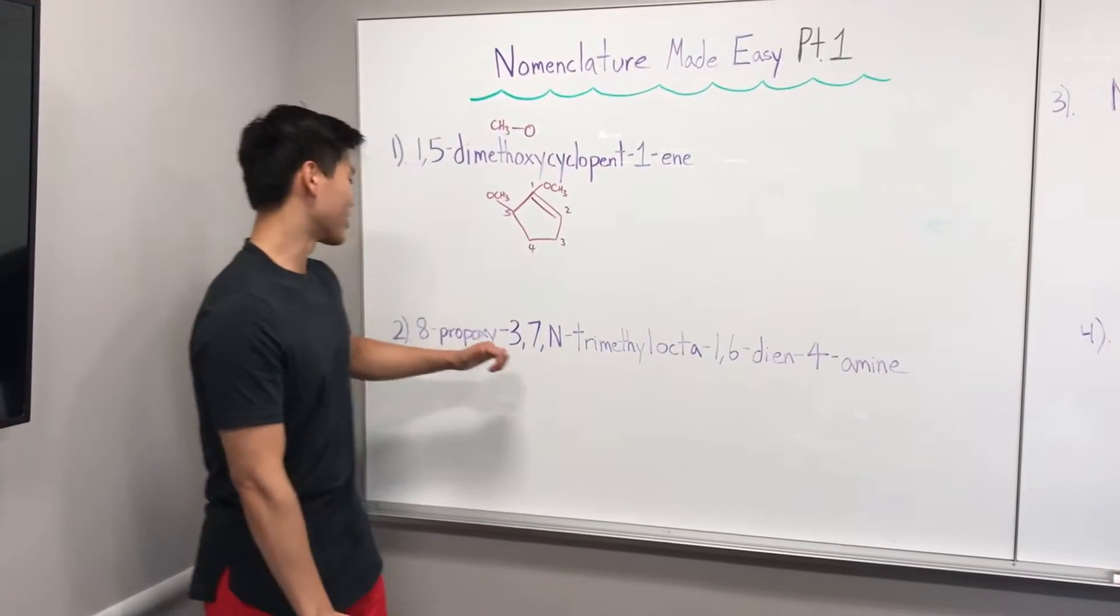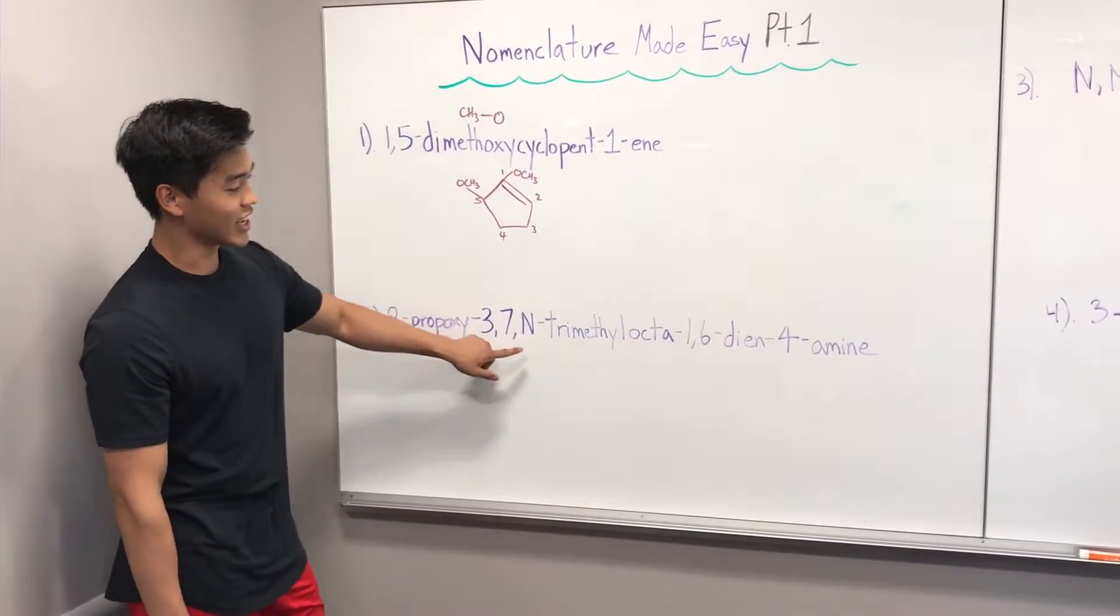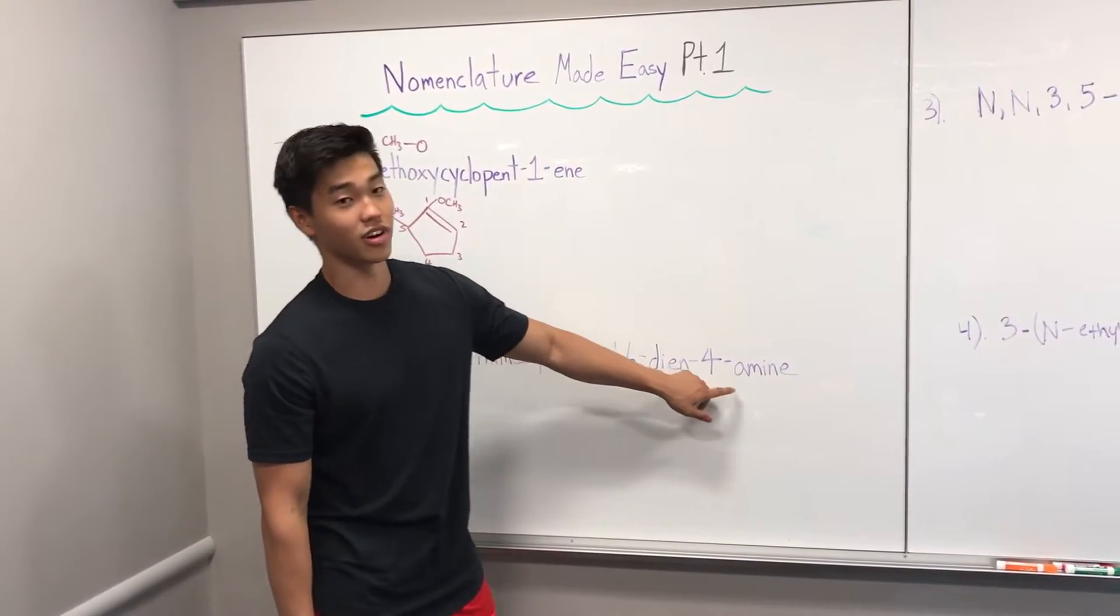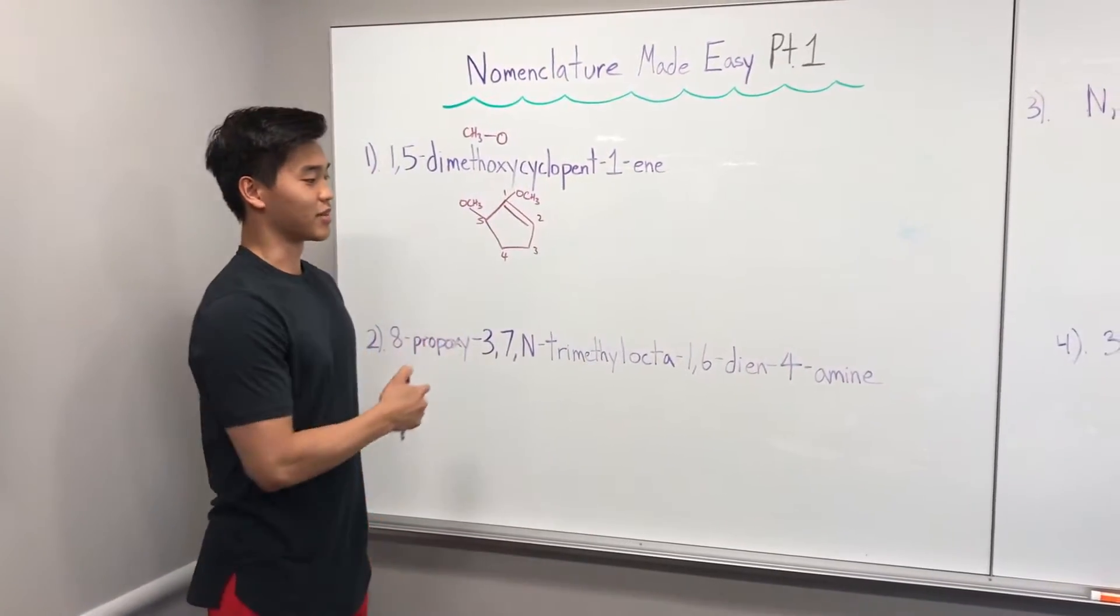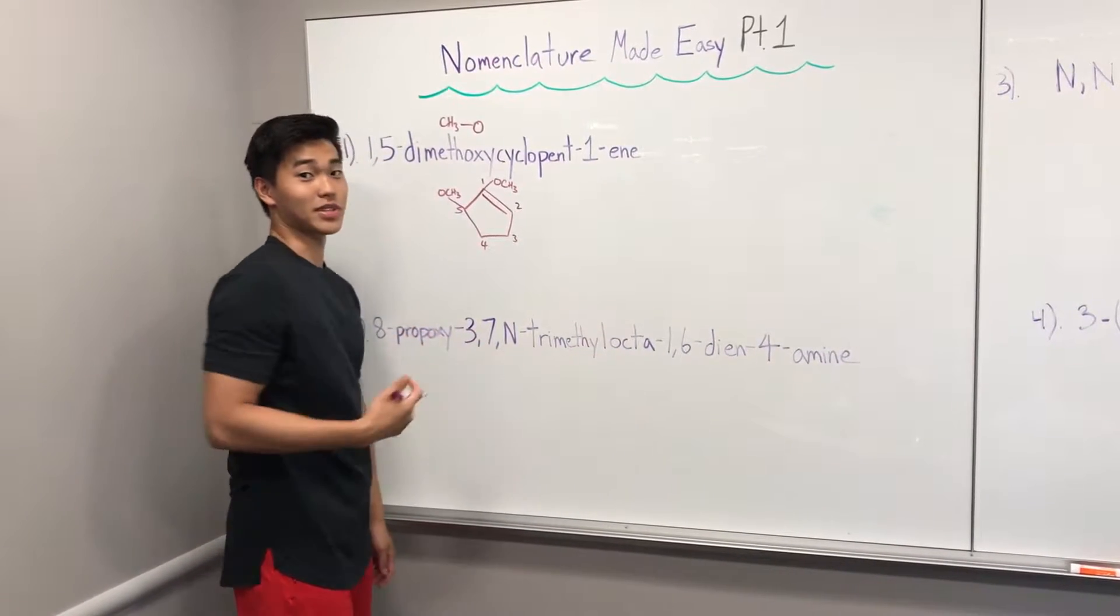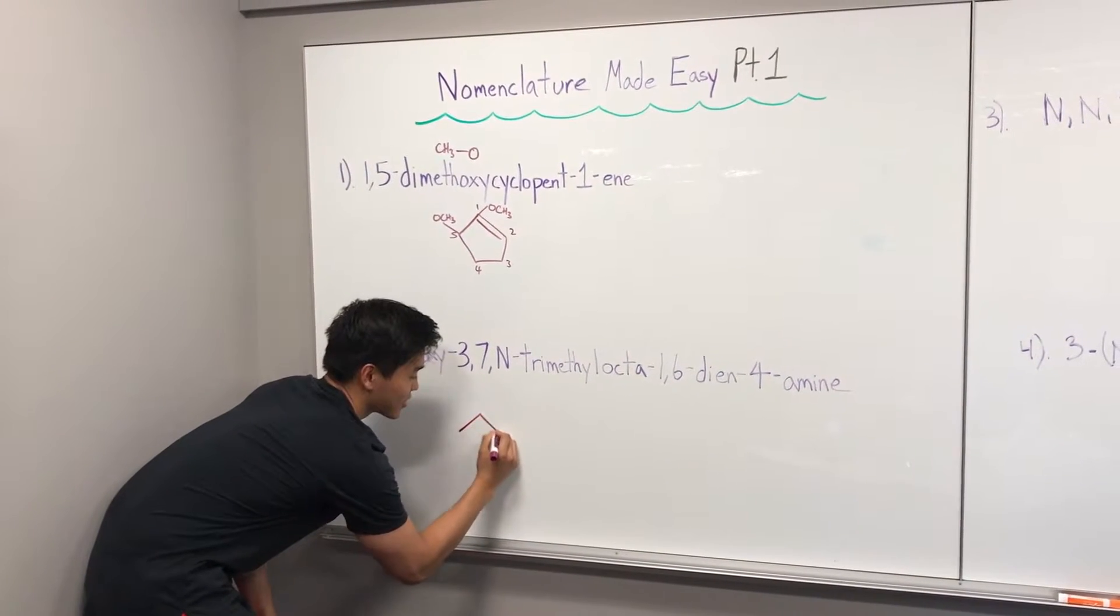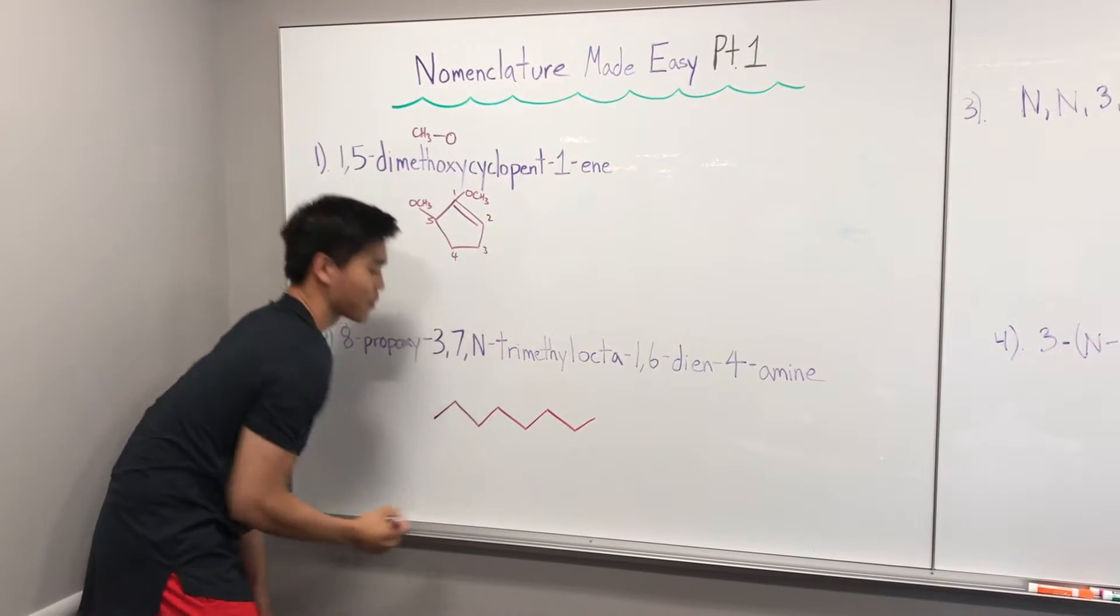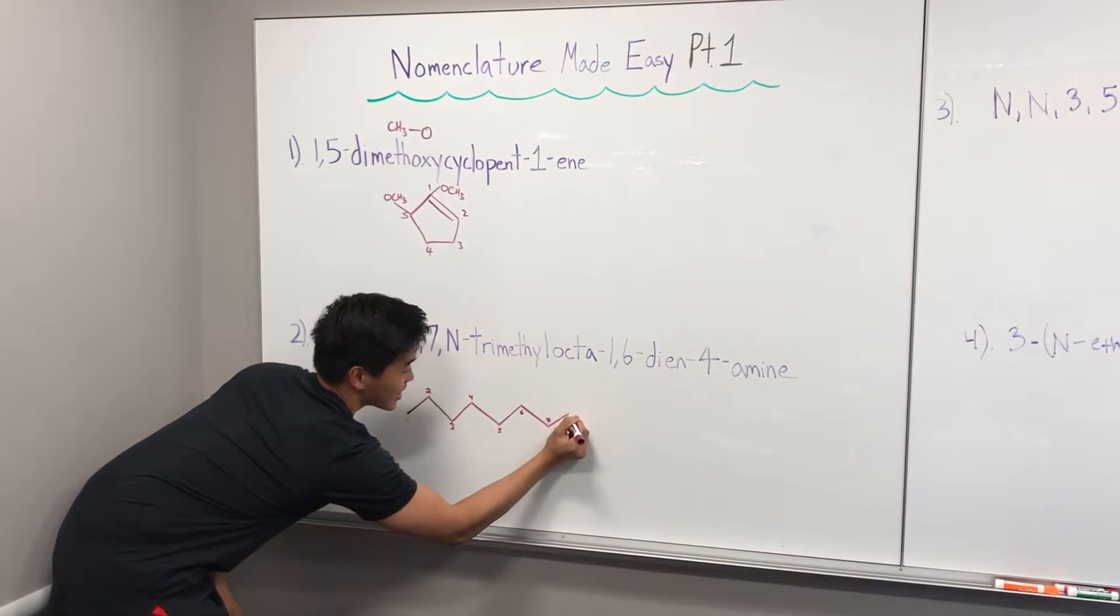Okay, so like Frank said, next we're going to go over problem number two, which is 8-propoxy-3,7,N-trimethyl-octa-1,6-diene-4-amine. So the first thing we're going to do, like Frank did earlier, is find the parent chain, which is right here, octa, which means eight. So one carbon here, two, three, four, five, six, seven, eight. And I'm going to go ahead and label those. So one to eight.